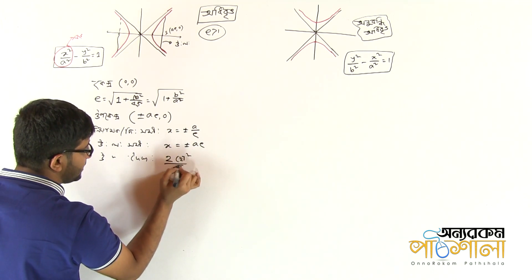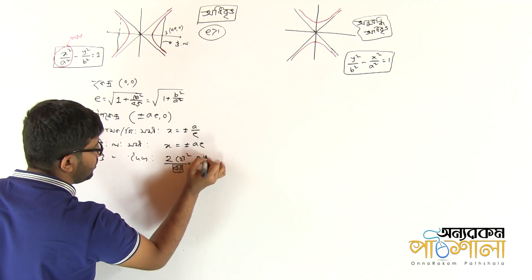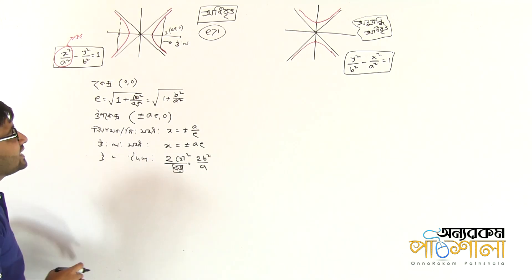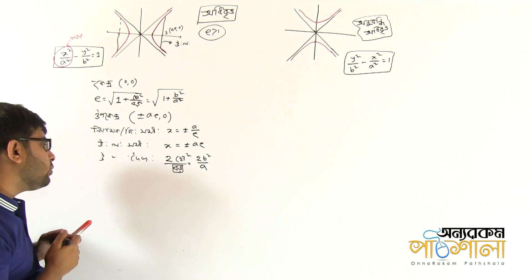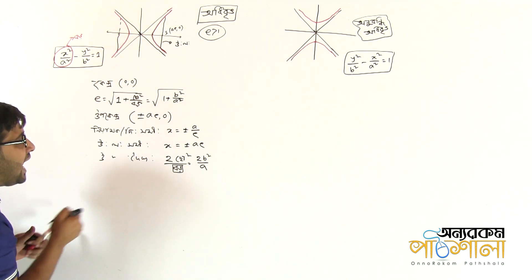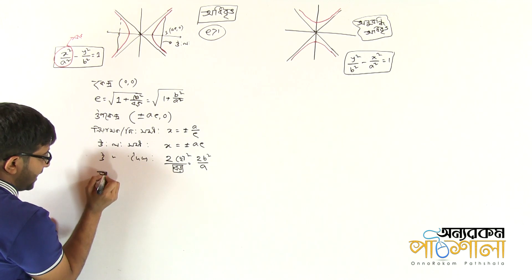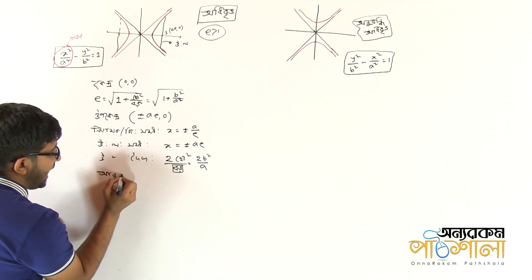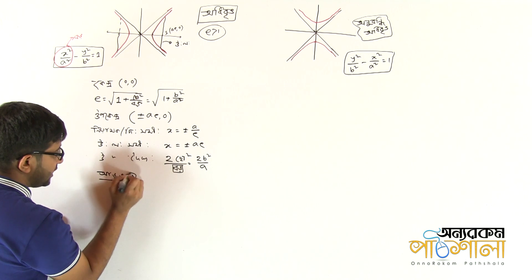It is 2 into b squared divided by a. We will use this one. So we have to use 2 into b square by a. So if you use plus ae, we will use this one, and the answer is ae.